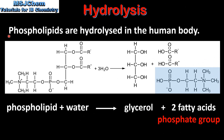Next we look at the hydrolysis of phospholipids. Phospholipids are hydrolyzed in the human body. In this reaction, we have a phospholipid reacting with three molecules of water to form a glycerol molecule, two fatty acids and a phosphate group attached to a polar molecule.